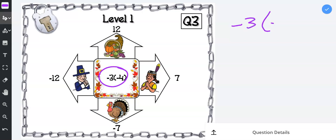There's a negative 3, parentheses, negative 4. If you see nothing between the 3 and the parentheses, then this means multiplication. We are multiplying negative 3 by negative 4.